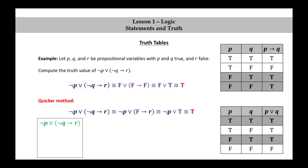Here's a nice quick visual way to do this problem. Replacing Q by its truth value T, the negation of T is F. The implication F implies anything is always T. And the disjunction of anything with T is T. So we see that the answer is T.